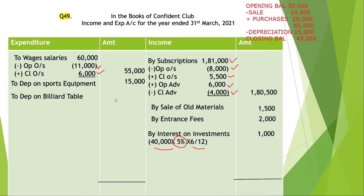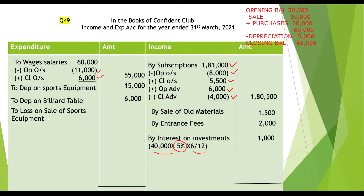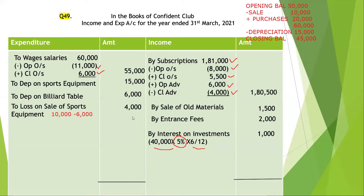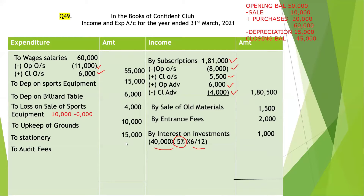Next, we charge depreciation on the billiard table amounting to rupees 6,000, which is 10% of rupees 60,000. For loss on sale of sports equipment: the book value was rupees 10,000 and we sold it for rupees 6,000, so we incurred a loss of rupees 4,000. Upkeep of grounds amounts to rupees 10,000, stationery is rupees 15,000, audit fees is rupees 2,000, and expenses on tournament will be subtracted from the donation for tournament.